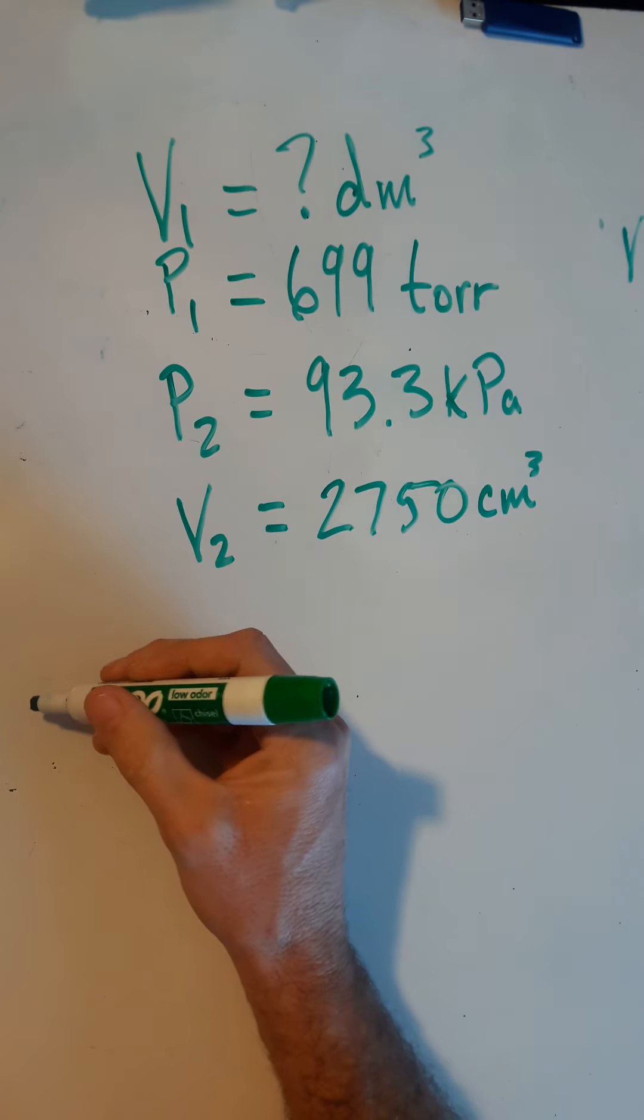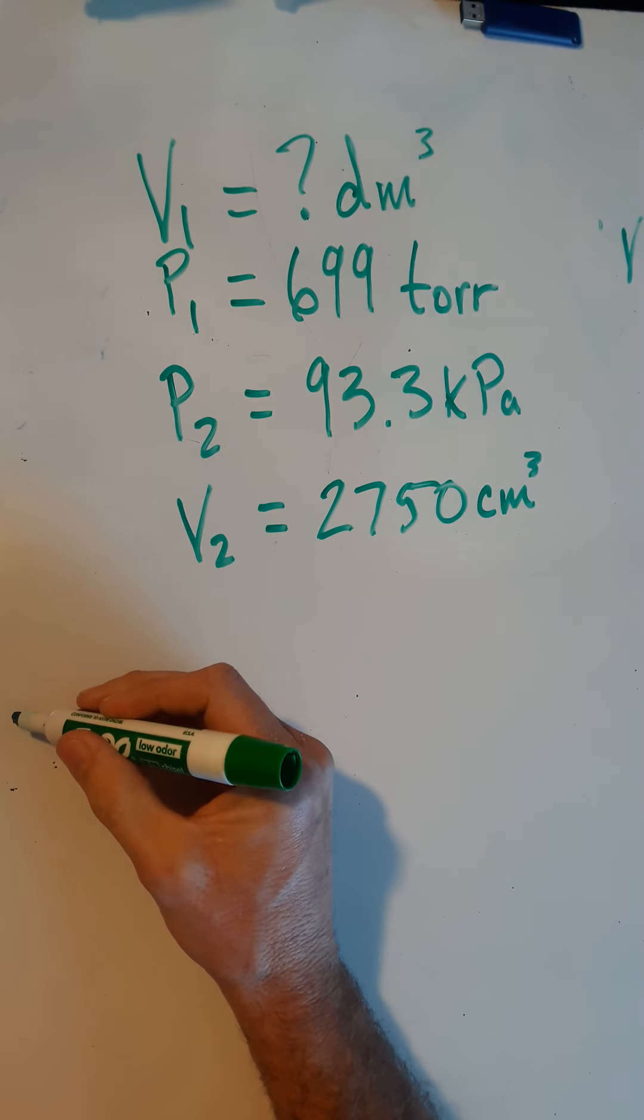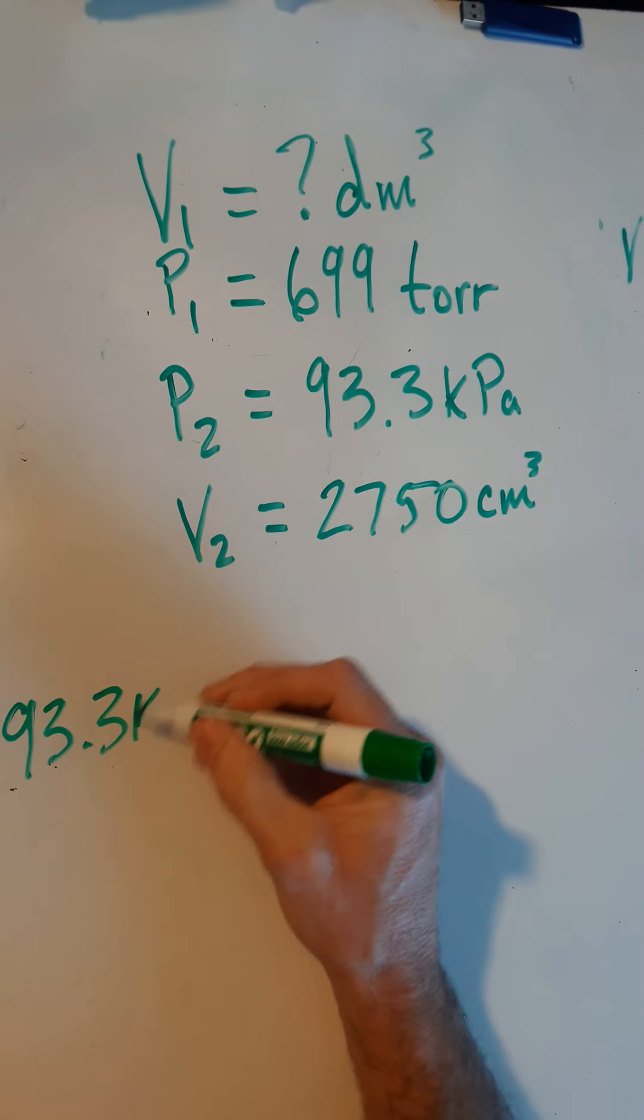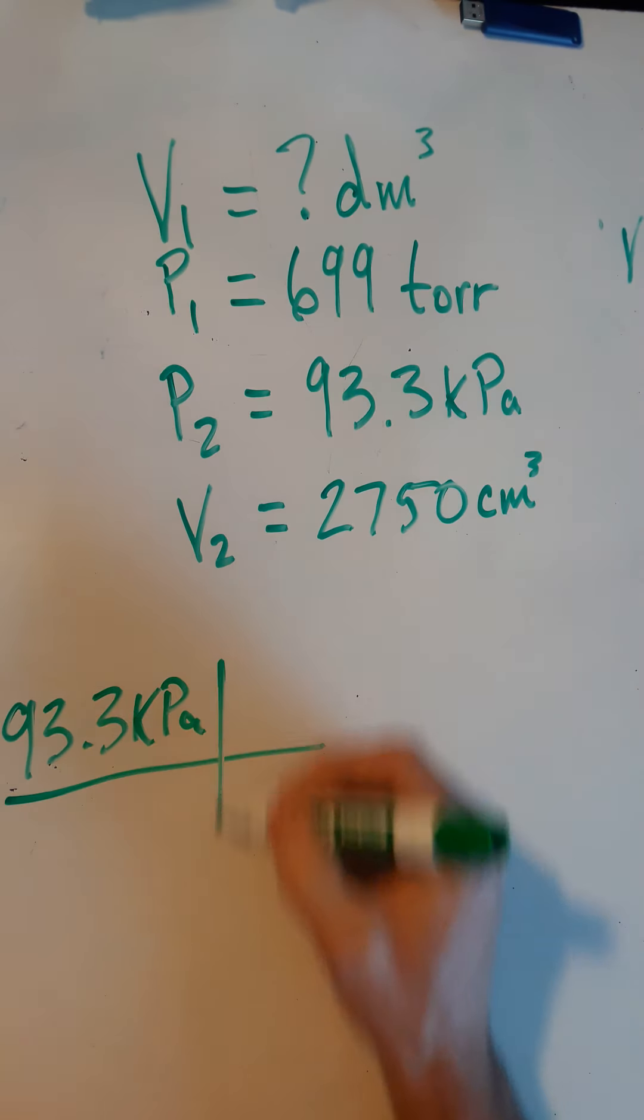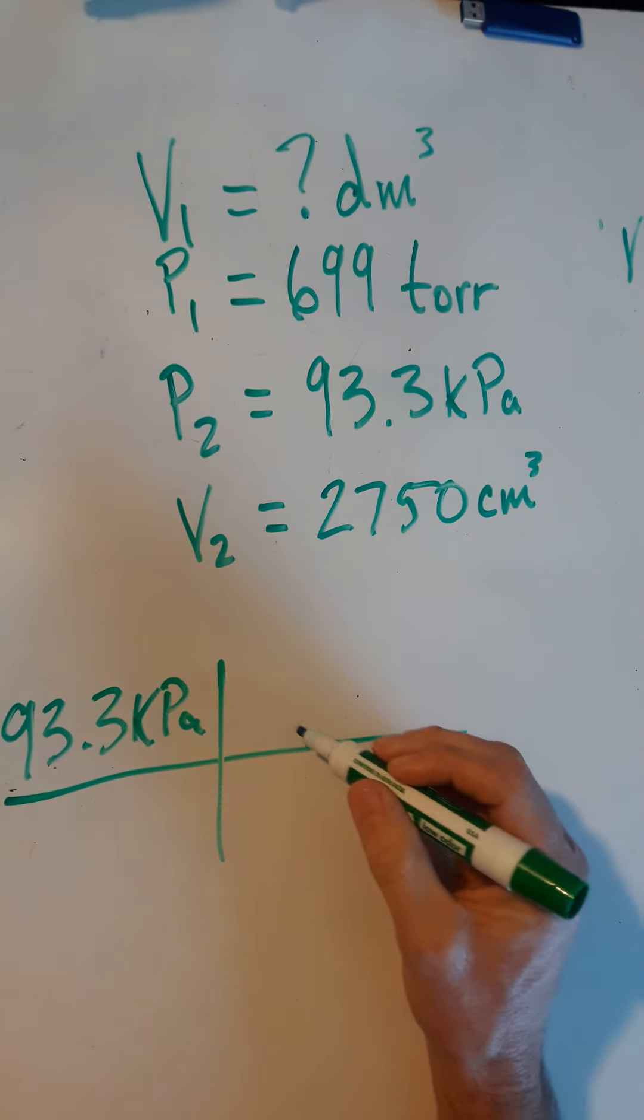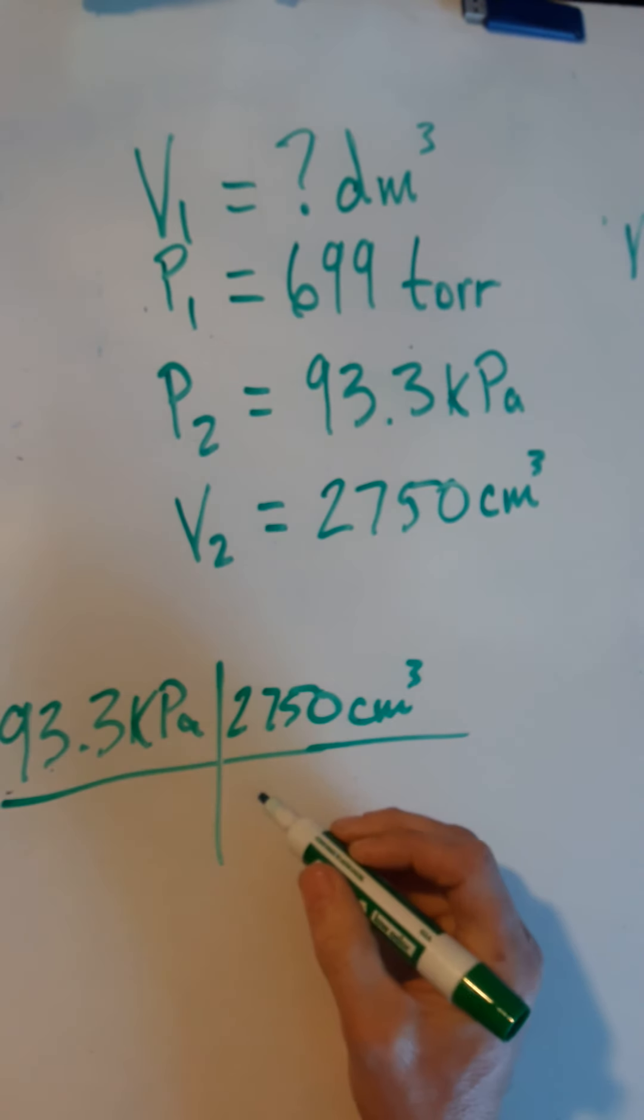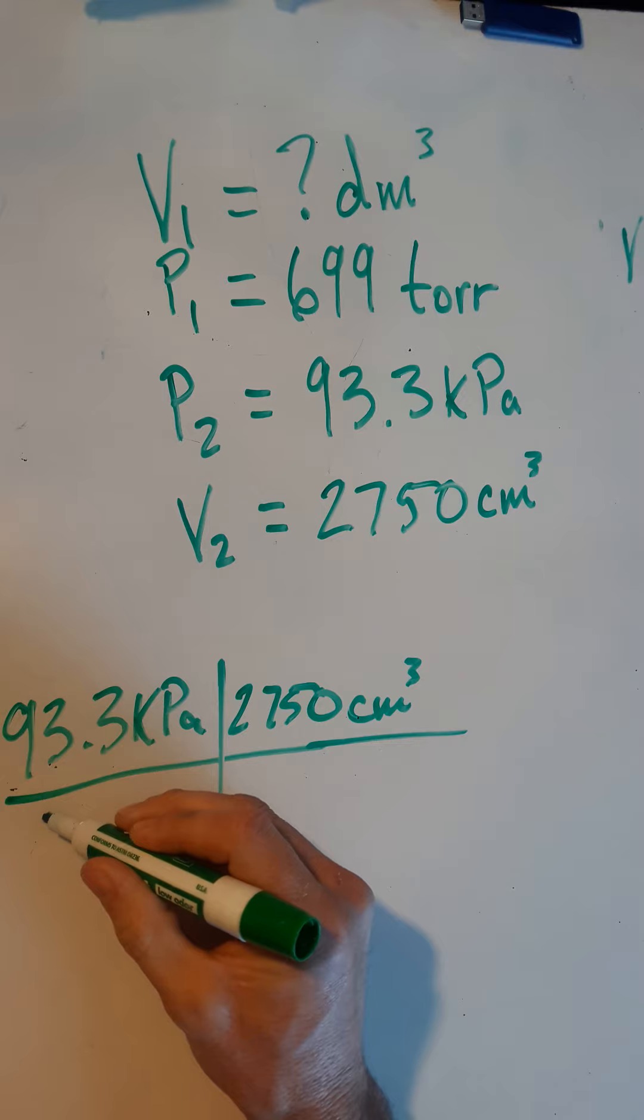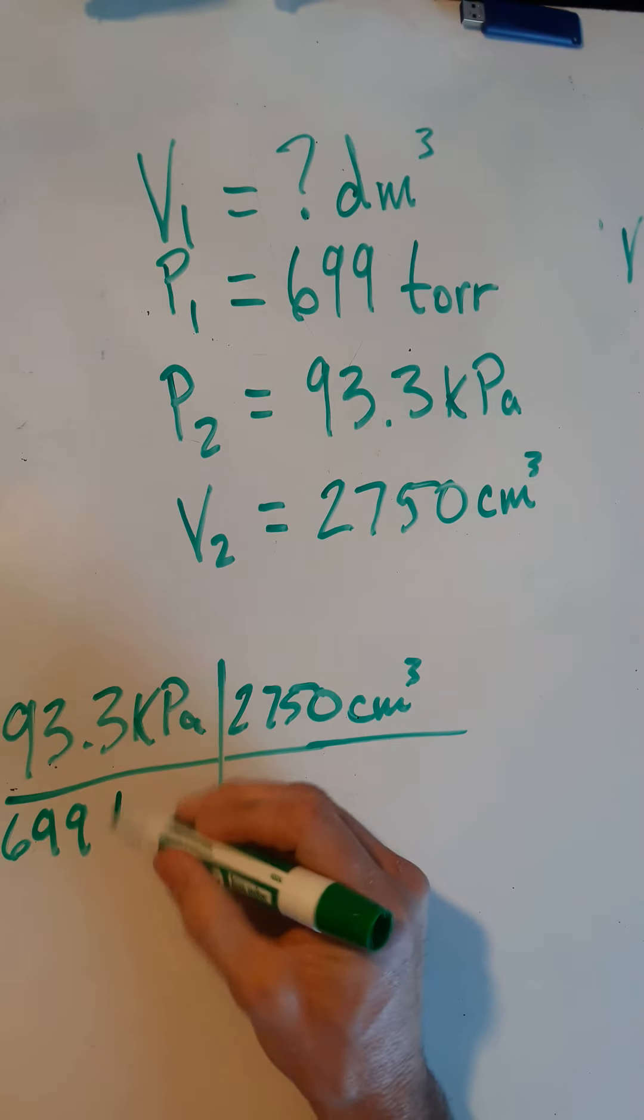I'm just going to do it all here. One foul swoop. So my P2 would be 93.3 kilopascals. Multiply that by my V2, which is 2,750 centimeters cubed. And I'm going to divide that by P1, which would be 699 torr.